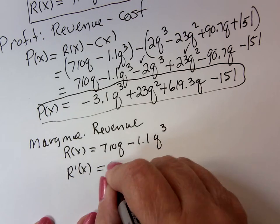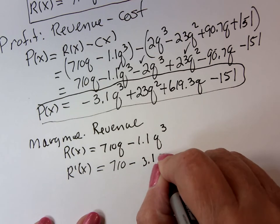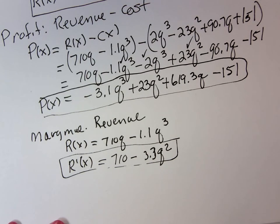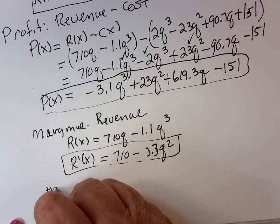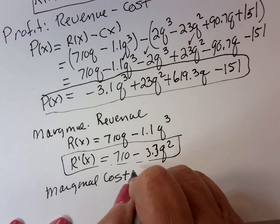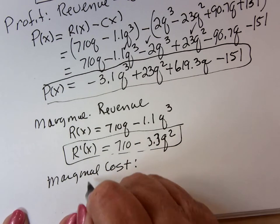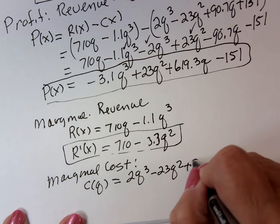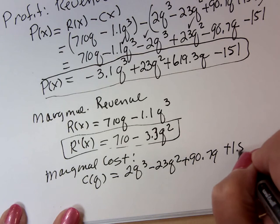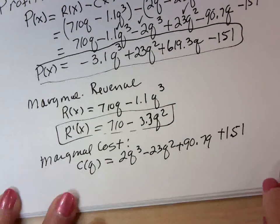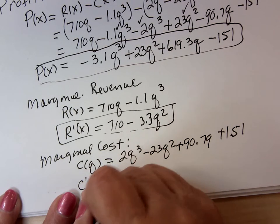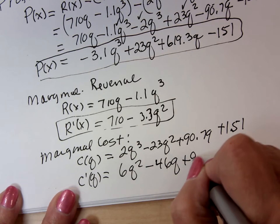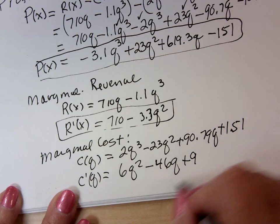And then it says find the marginal cost. And that's just the derivative of the cost curve. So C'(Q) equals 6Q² minus 46Q plus 90.79.